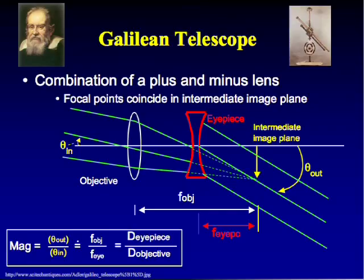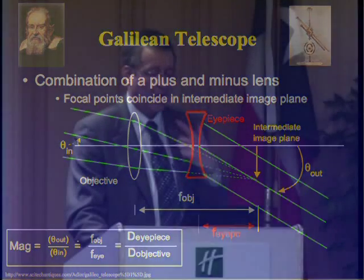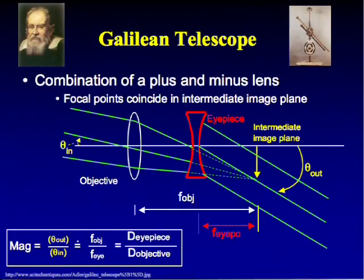Most surgical loops use Galilean telescope design because of the upright image and compact size. If you want to use loops at a 33 centimeter working distance, you simply add a plus three lens on front of the Galilean telescope.